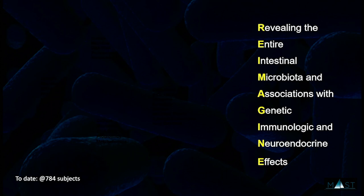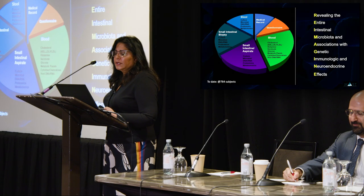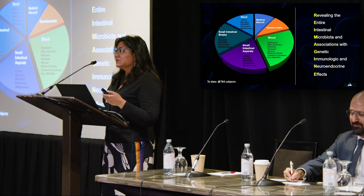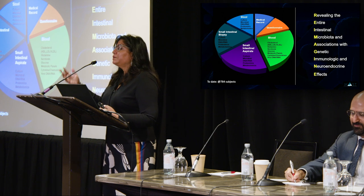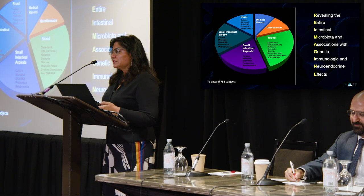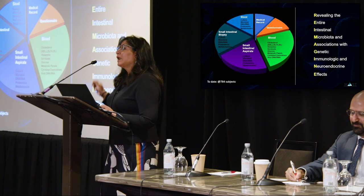At Cedars-Sinai, in the MAST program, we have a project called the Reimagine program. We take subjects coming in for an upper endoscopy, and our GI team collects small intestinal biopsies and aspirates. By comparing that with blood samples, questionnaires, medical records, and stool, we can microbially fingerprint these subjects and compare findings across diseases. For example, with rheumatologic disease patients, we can identify what's different in the small intestinal microbiome. To date, we have almost 800 subjects cataloged.